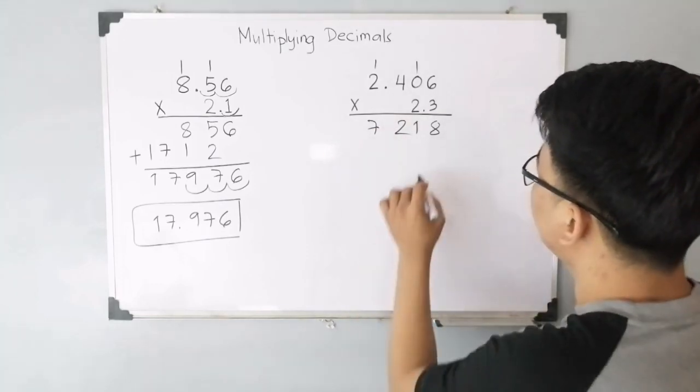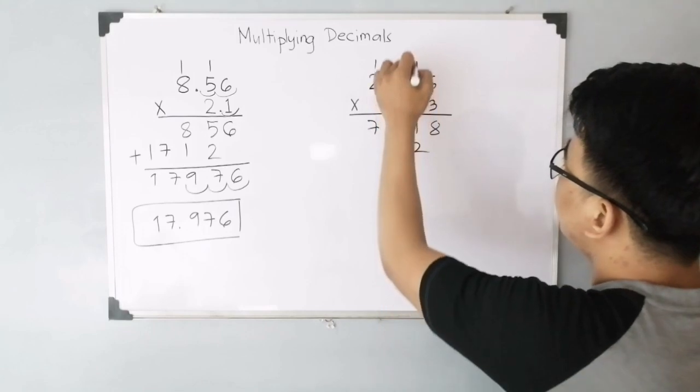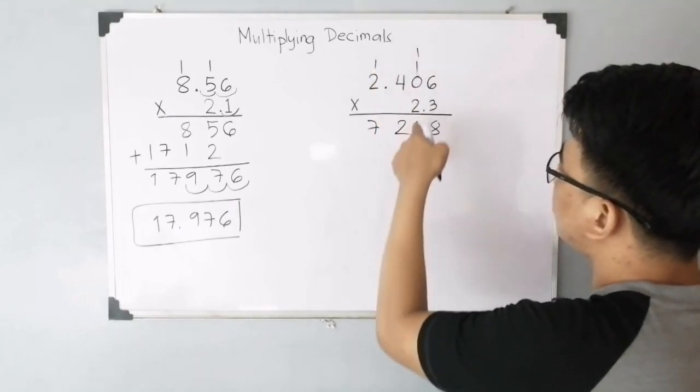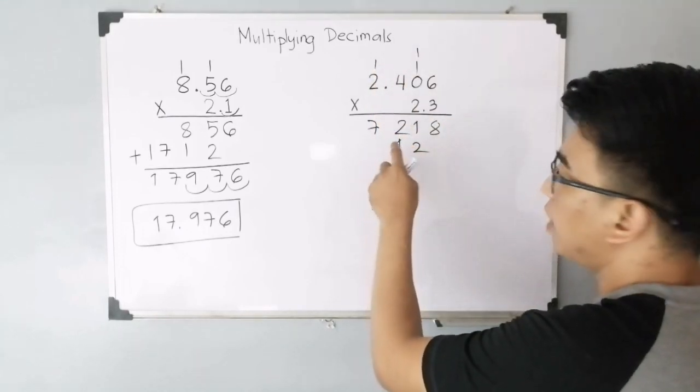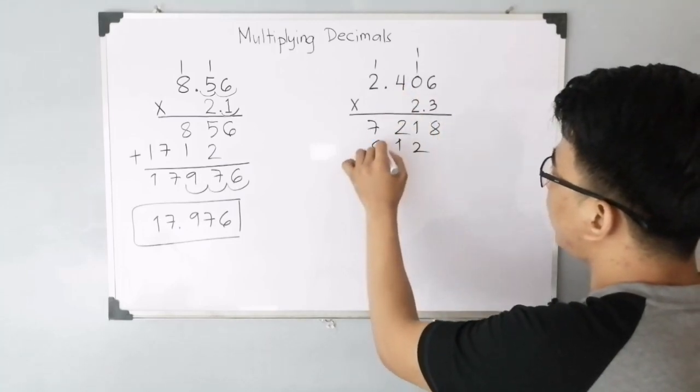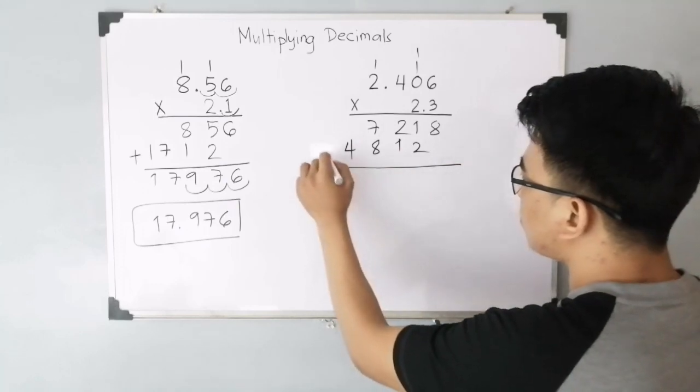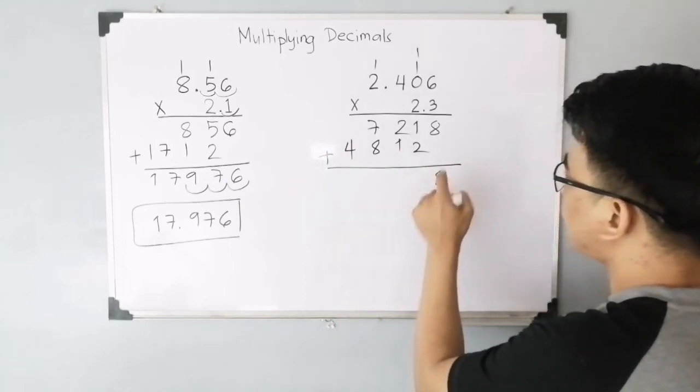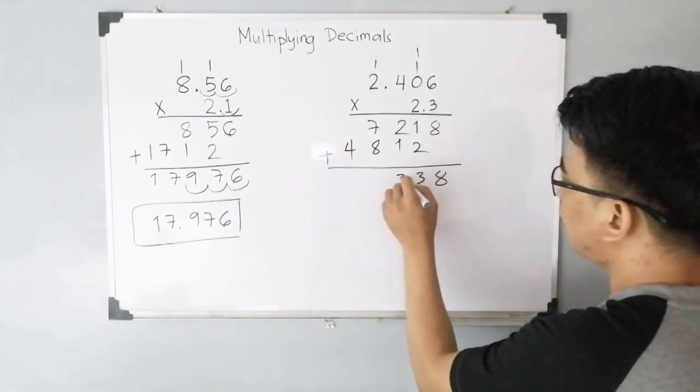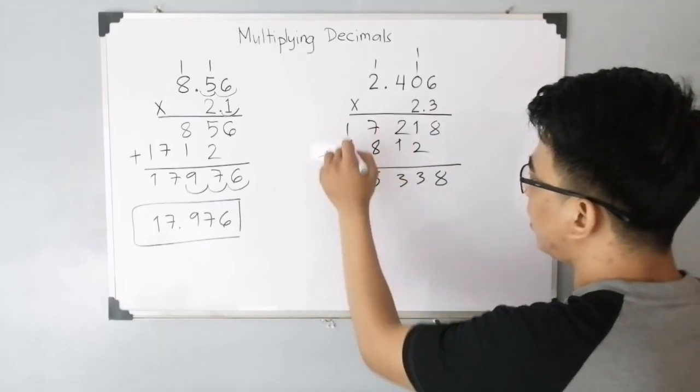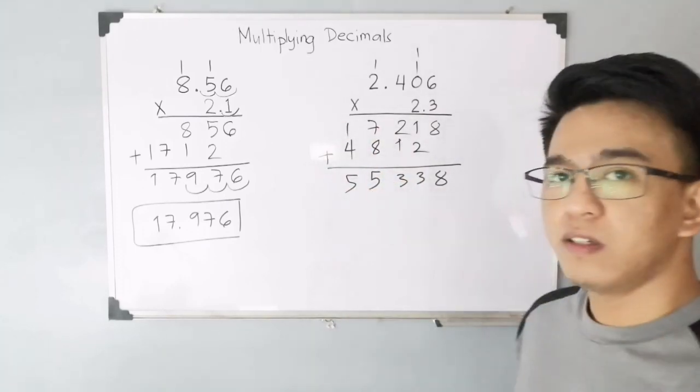Now, 2 times 6. 12. Carry 1. 2 times 0. 0. Plus 1. You have 1. And then, 2 times 4. That will give you 8. 2 times 2. 4. Add all the numbers. You have 8. 3. 3. 3. 15. Carry 1. And this is 5.